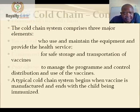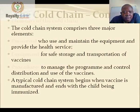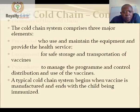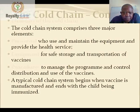The cold chain has three major elements. The first is personnel — looking at who is using and maintaining the equipment and who is providing the health service. The second is equipment — what is used for safe storage and transportation of vaccines. The third is procedures — to manage the program and control distribution and use of vaccines.